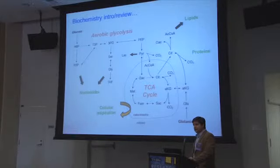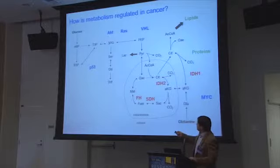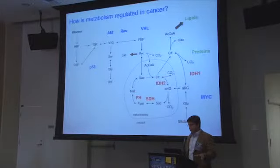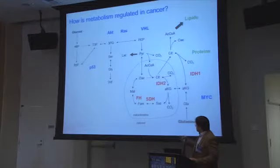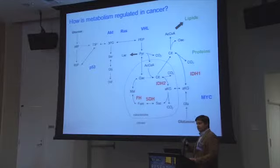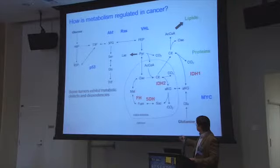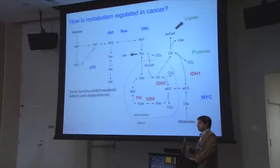Over the last couple of decades, we've learned that many oncogenes and tumor suppressors — the genes that are mutated or overexpressed and play causative roles in tumorigenesis — regulate these metabolic pathways. More intriguingly, we've learned that many metabolic enzymes themselves are mutated or differentially expressed in specific tumor types and also play a causative role. Oftentimes, these are loss of function mutations, which initiate specific metabolic dependencies that we're hoping to target.